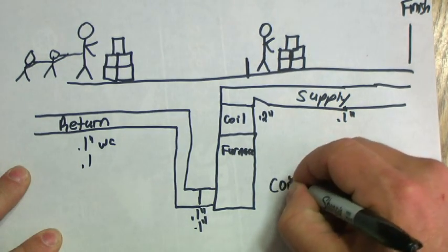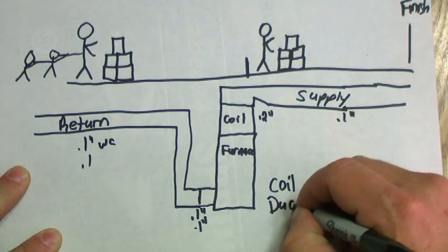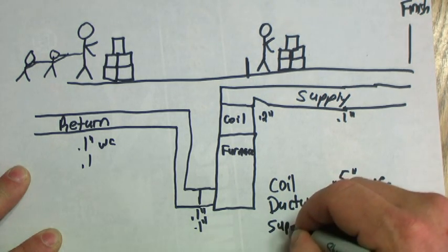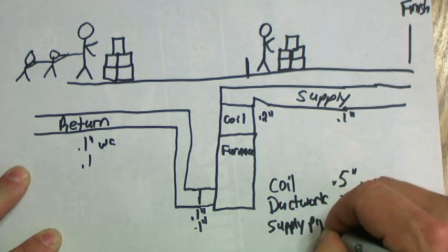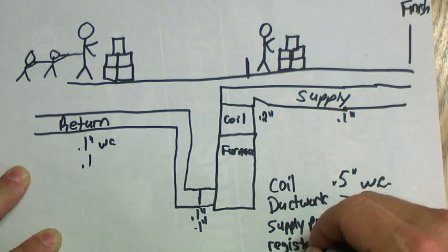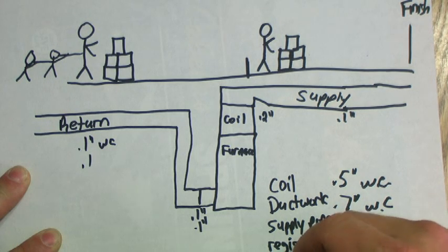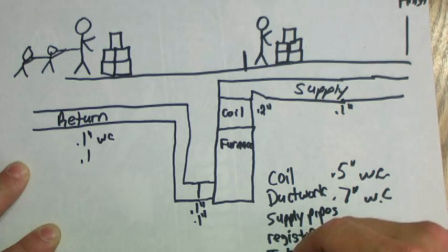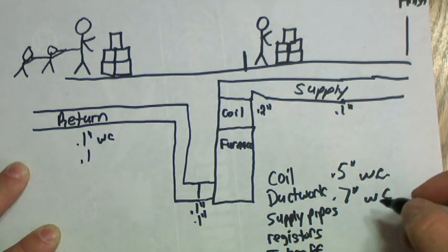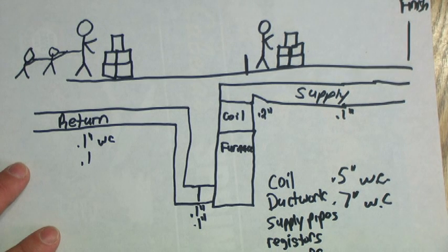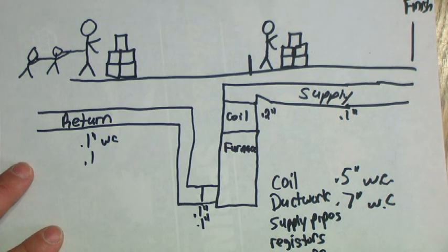Coil, ductwork, supply pipes, registers, takeoffs. I mean, everything. Everything that's hooked to this furnace or to this ductwork ultimately will be a resistance.